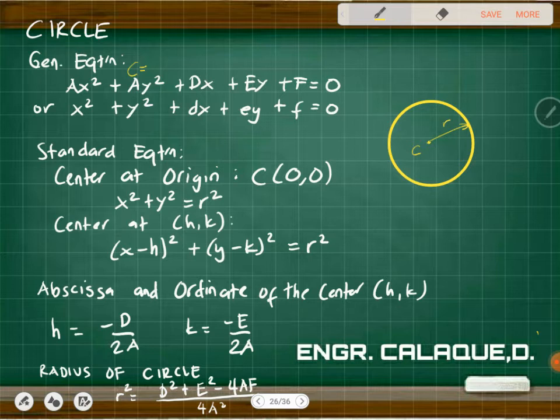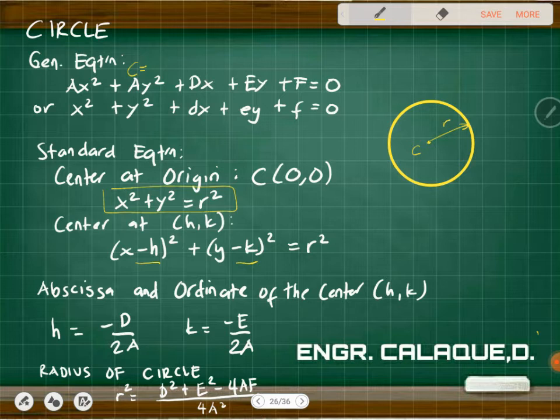We also have the standard equation for the circle. If the center is at the origin, the standard equation is x squared plus y squared equals r squared. If the center is at abscissa h and ordinate k, it just gets minus h and minus k added. So the abscissa is this one, and the ordinate is this one.